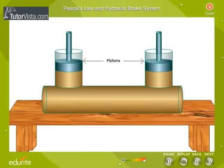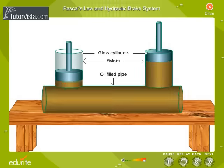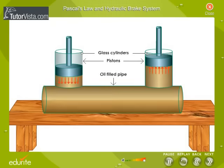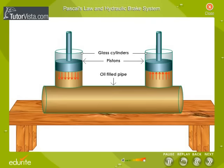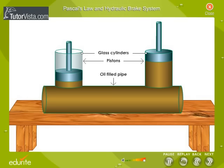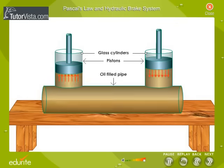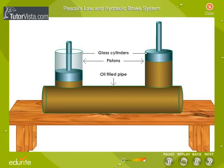Two pistons are fitted into two glass cylinders filled with oil and connected to one another with an oil-filled pipe. If you apply a downward force on one of the pistons, the force is transmitted to the second piston through the oil in the pipe. Since oil is incompressible, the efficiency is very good.